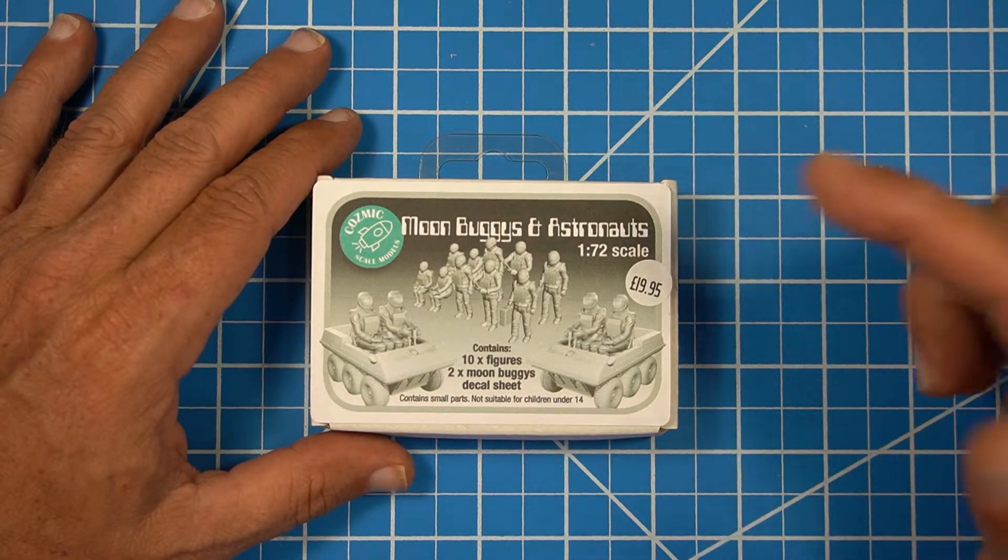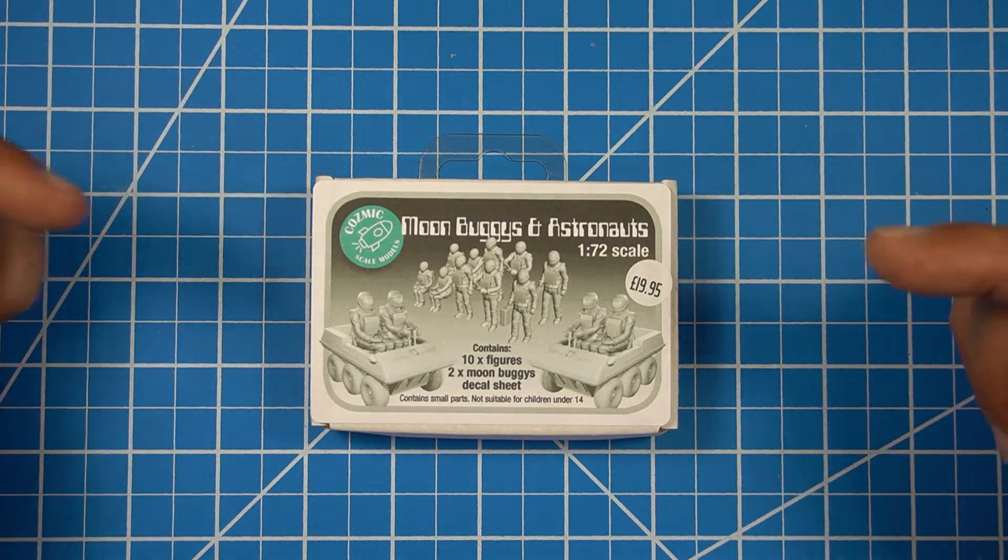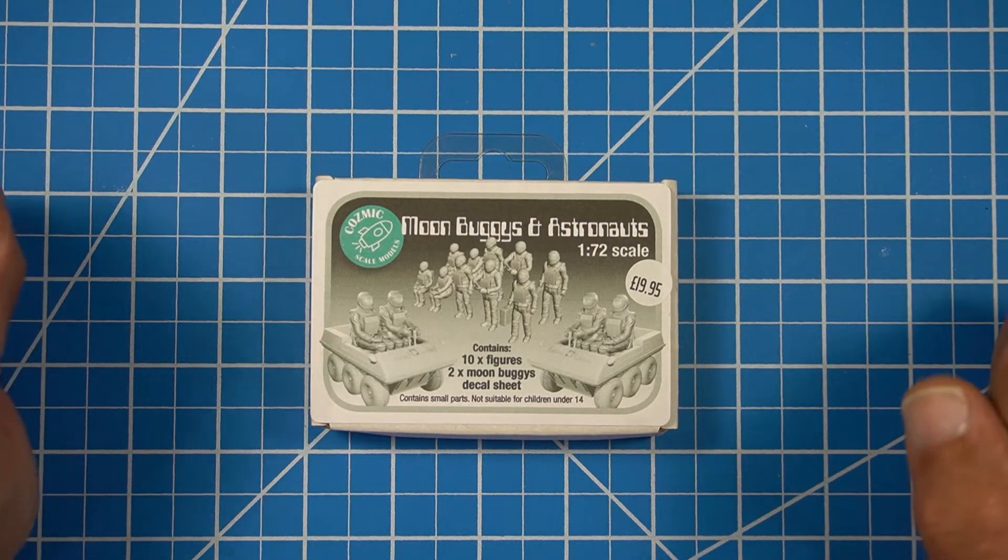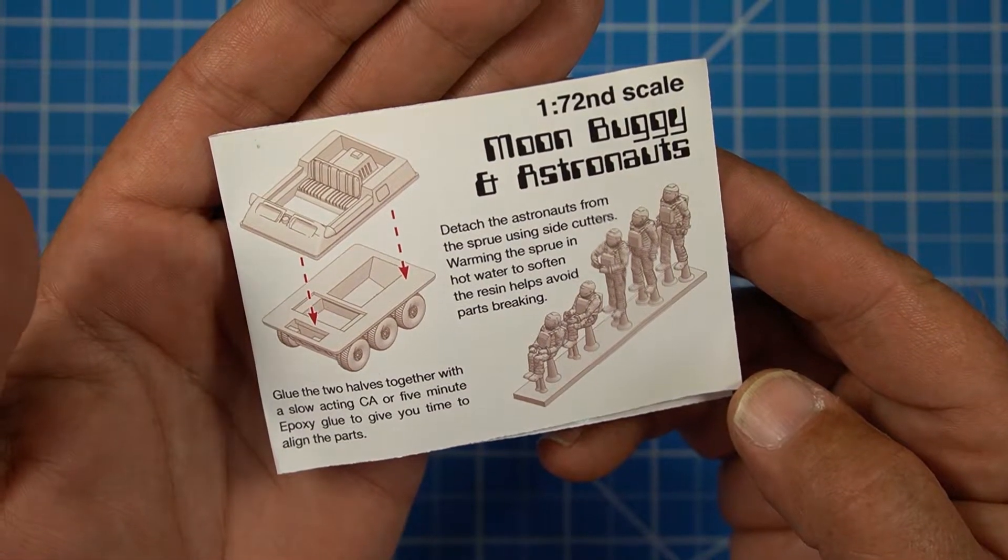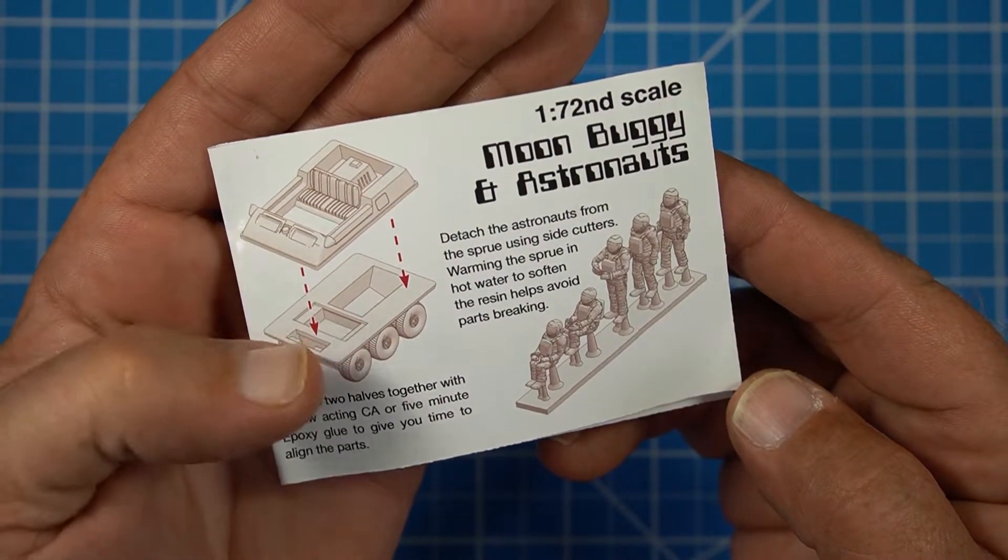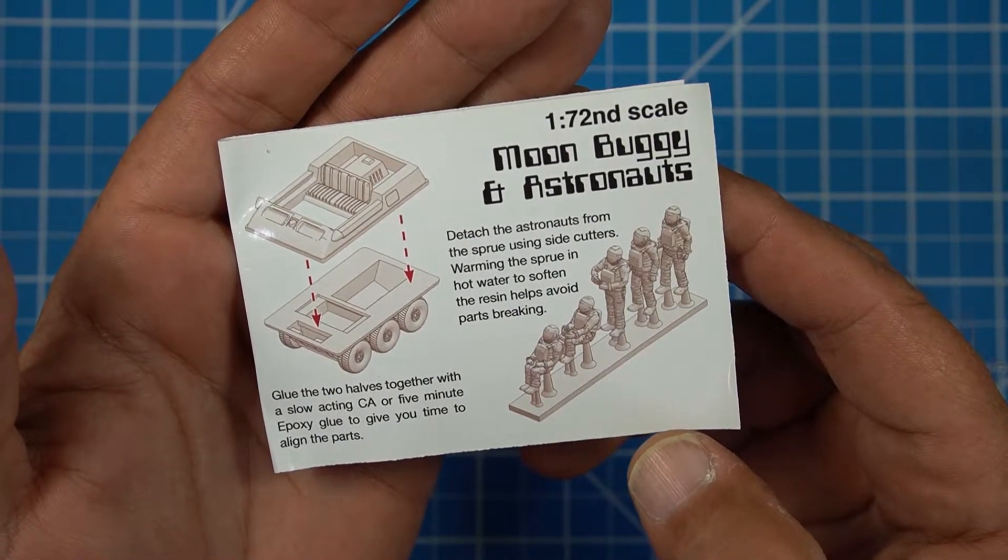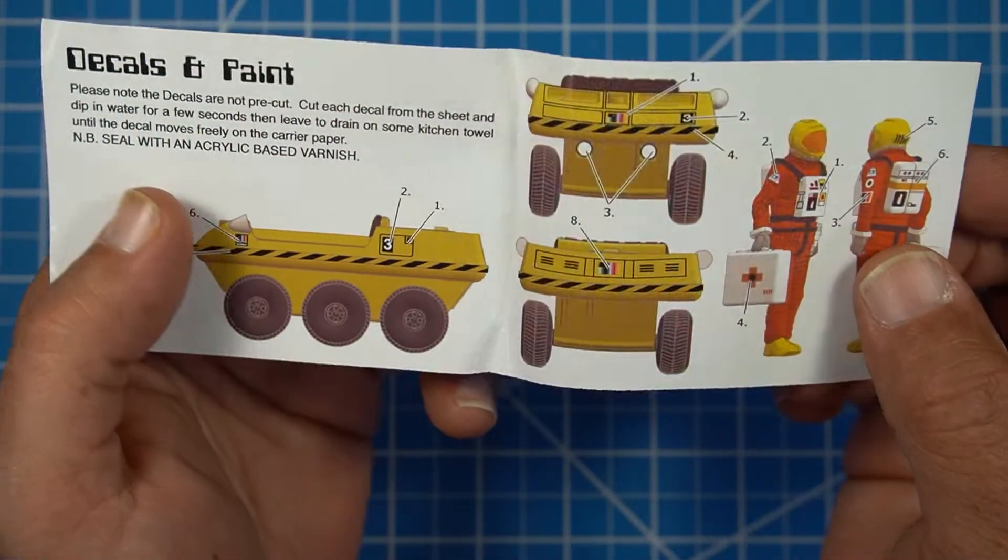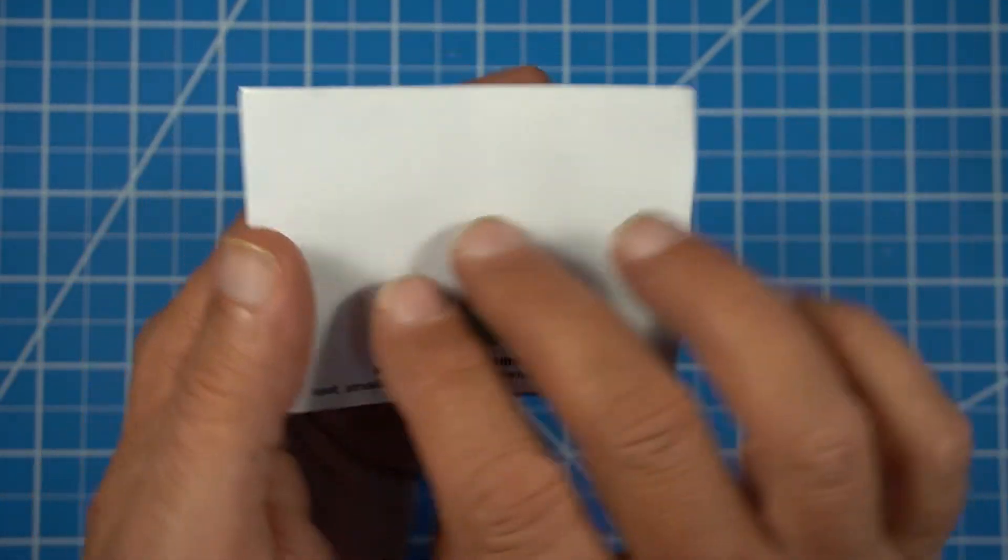And last but not least is our 1/72nd scale set of figures and moon buggies. It comes with 10 figures, 2 moon buggies, and a decal sheet. I'm going to open these up and show you what's inside. First we'll start with the instructions. The wheels don't come separate on this one. They're all together on the bottom so you're just going to put the top half together. All of the little figures in 1/72nd scale come on the supports so you're going to have to take those off carefully. It's exactly the same as the other one showing you painting and decal placement. And there's nothing on the back of this one.